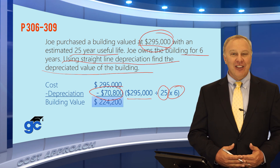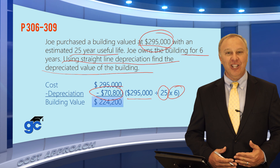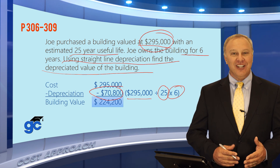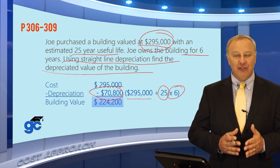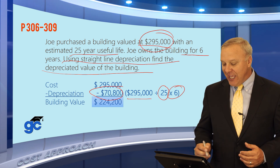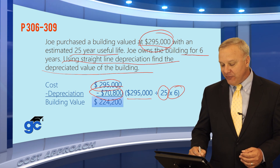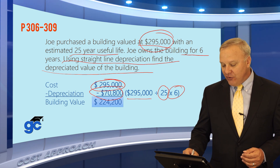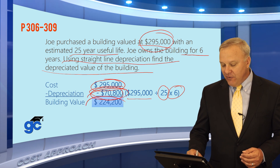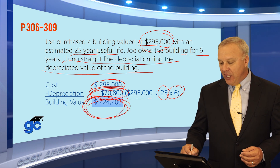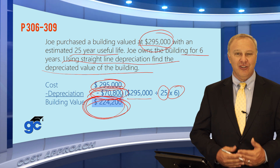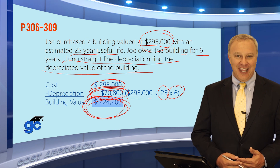On these questions — and I've warned you about this in several videos — make sure you're actually answering the question you're being asked. In this case, they could have asked you the reproduction cost or the total depreciation, but they didn't. They asked what the building value is at the end of six years, which is the question you had to answer.